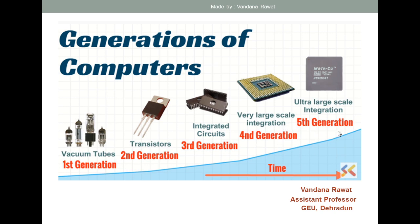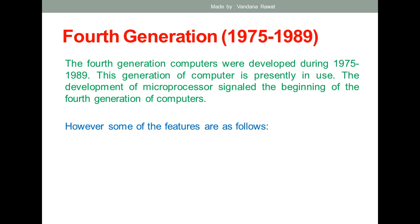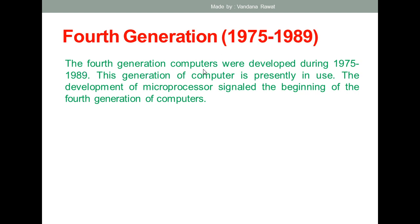Let us start with the fourth generation. The time period of this generation starts from 1975 and ends approximately in 1989. The fourth generation computers were developed during 1975 to 1989. This time period can vary by only one to two years, not five to six years. This time period is mentioned in several books, so just fix this time period so you don't get confused in your exams.